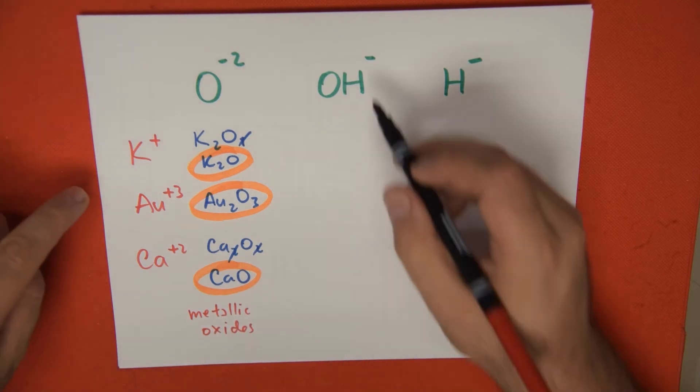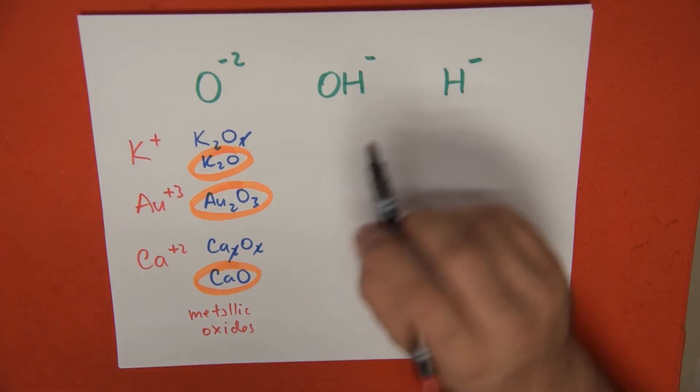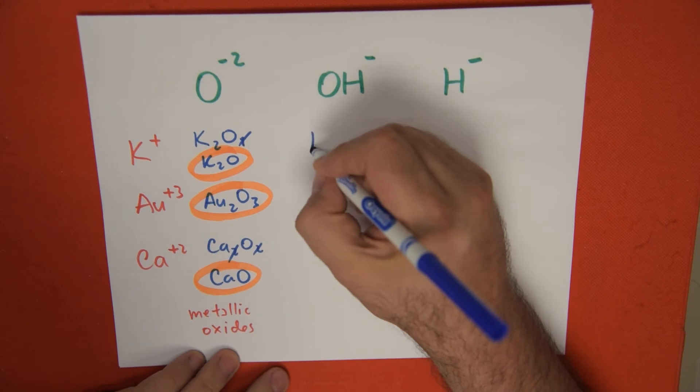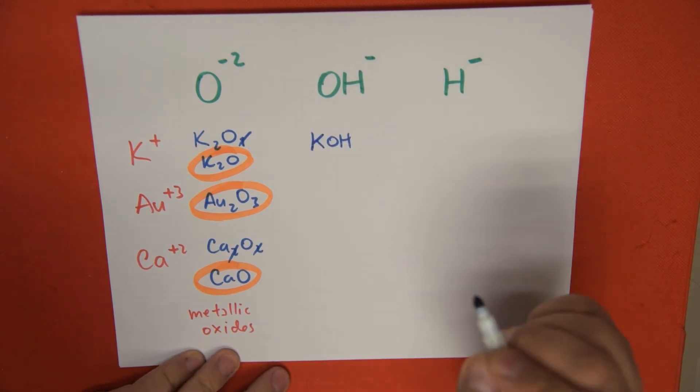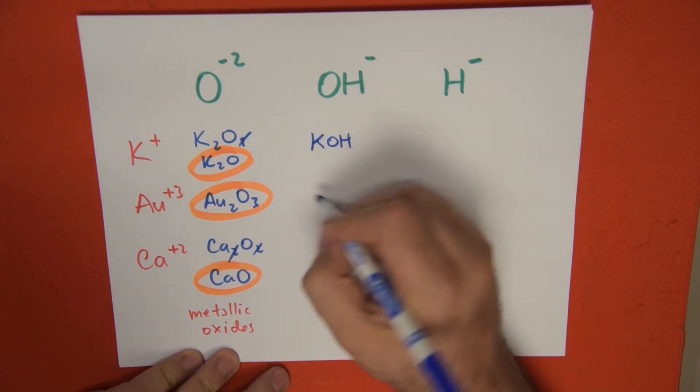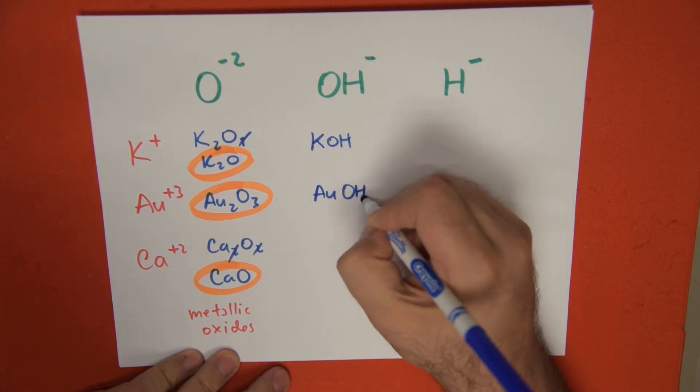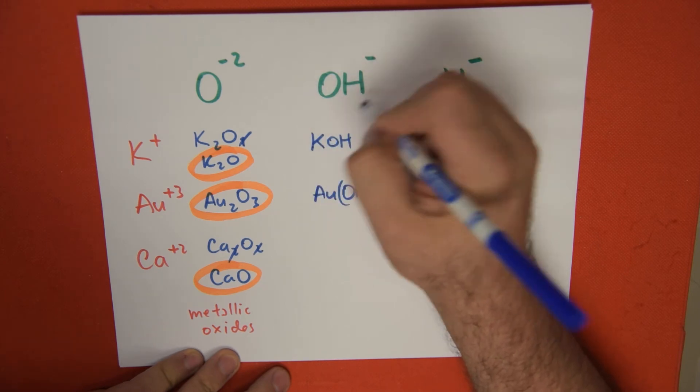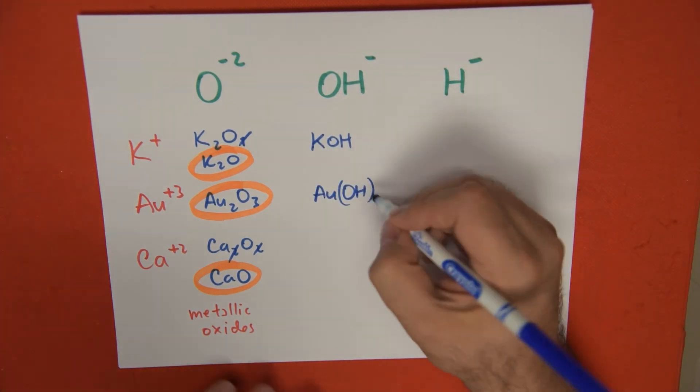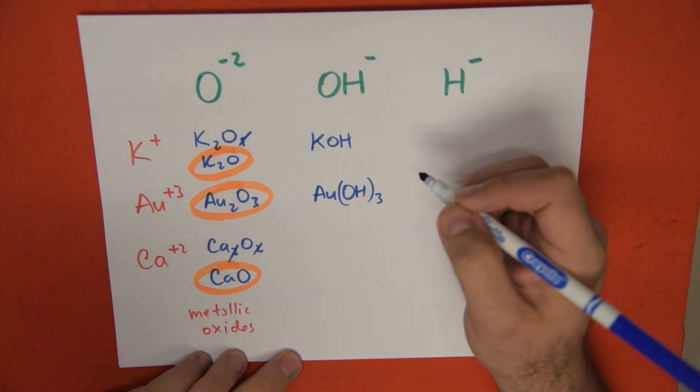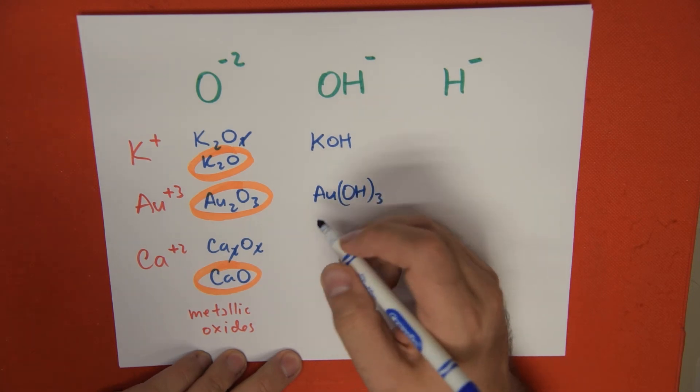Then, same story. This is -1. +1, -1 is going to cancel out. So we get KOH, potassium hydroxide. Here, gold is going to get one, but we don't write it down. OH, between parentheses, because this whole thing counts as -1. This is Au(OH), parentheses, three. And last but not least, we get calcium, parentheses, OH. And we get a number two.